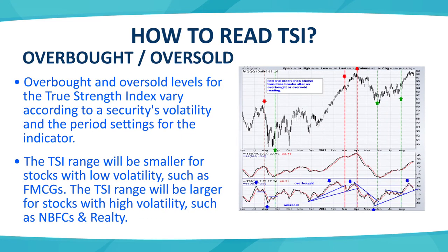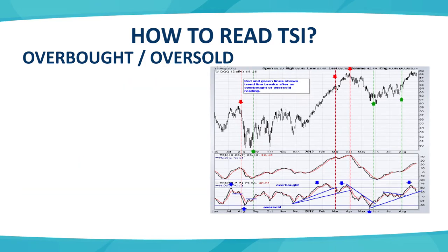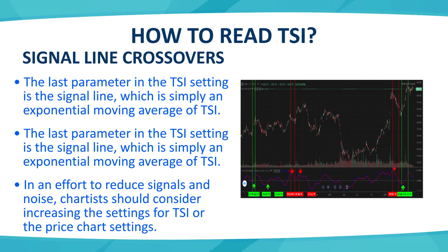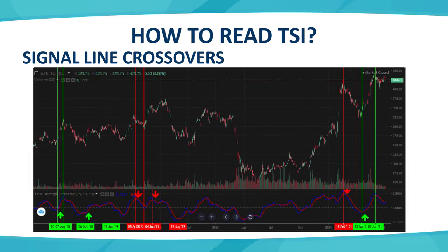Moving to the overbought and oversold strategy. Overbought and oversold signals for a security depend on the TSI selected periods. If the period scale is short, we will see more frequent overbought and oversold signals. In the chart, we can see the price and signal lines. Moving to signal line crossover — the signal line is nothing but the EMA of TSI, which is the second line we see on the indicator. Where we see a positive signal line and TSI crossover, that is a buying signal shown in the green segment.